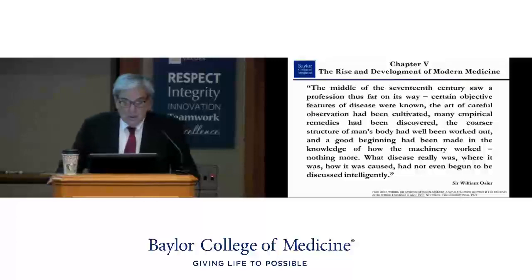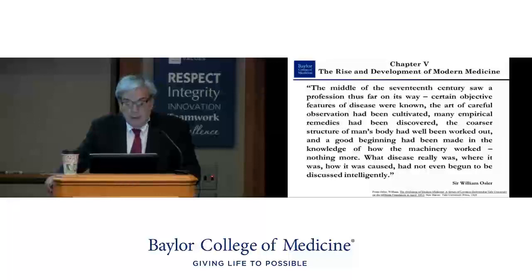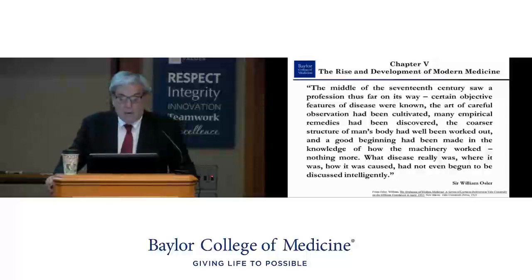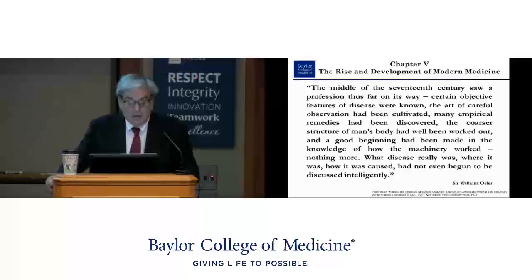This is how Osler begins chapter five on the rise and development of modern medicine: 'In the middle of the 17th century, certain objective features of disease were known. The art of careful observation had been cultivated. Many empirical remedies had been discovered. The coarser structure of man's body had been well worked out, and a good beginning had been made in the knowledge of how the machinery worked—nothing more. What disease really was, where it was, how it was caused, had not even begun to be discussed intelligently.'